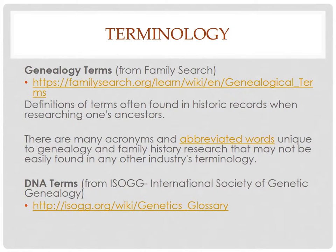There is some terminology in genealogy that you'll need when you're first getting started. There are genealogical terms in historical records, acronyms, and abbreviated words — FamilySearch.org has an excellent spot where you can look up all kinds of genealogical terms. Also, for DNA specifically, ISOGG — the International Society of Genetic Genealogy — has a wiki site of genetic glossary terms. It's a great place if you're starting to learn about DNA or genetic genealogy and aren't sure what different things mean.